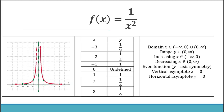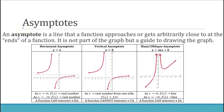Here are the properties of 1 over x squared: its domain and range, it is increasing from negative infinity to 0 and decreasing from 0 to infinity. It is an even function with y-axis symmetry. The vertical asymptote is x equals 0 and the horizontal asymptote is y equals 0.